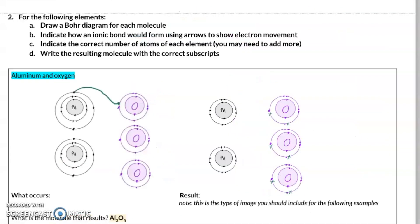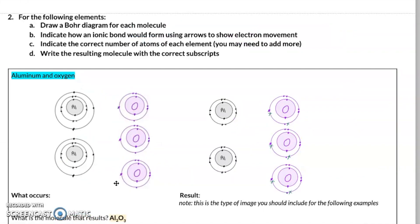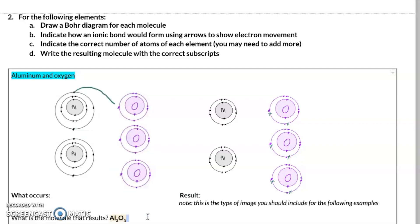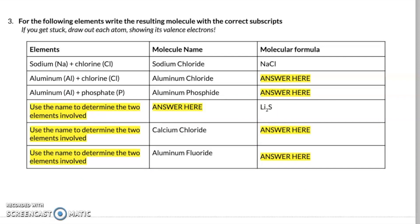And that is what you see in question number two of your document. Here we've included the process, just so you can see the thinking, as well as the result. We would expect that you would upload a picture something like this, and then write the molecular formula. And finally, question number three in this document is all about naming.